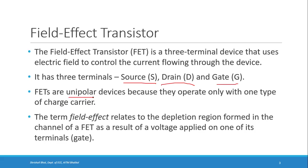Unipolar in the sense they operate only with one type of charge carrier, unlike BJTs which are bipolar — their current flow is because of both types of charge carriers, that is majority and minority charge carriers. In case of FET it is only unipolar, that is only one type of charge carrier.